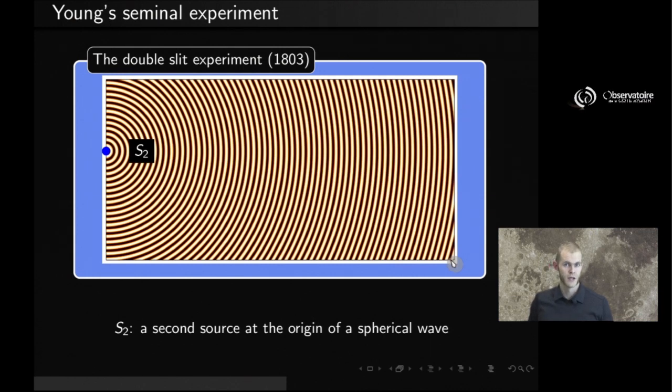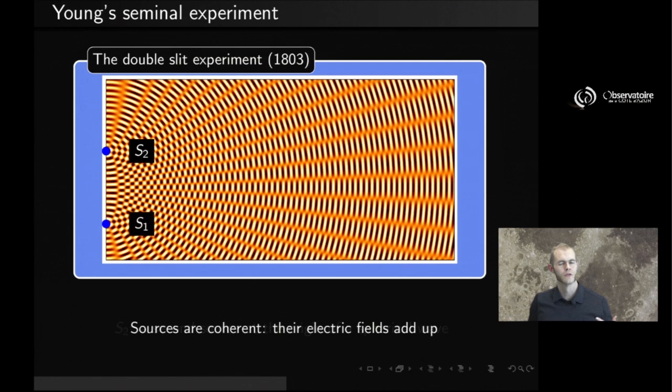Now, keep in mind that what I'm showing here on the screen is not something that our eyes would be sensitive to, because our eyes are not sensitive to the electric field. Instead, what we're going to sense is the intensity associated to that electric field. But you now know that when two light sources are coherent, what you're going to do to compute the intensity of that light is first to add up the electric fields associated to those two sources, which would look something like that, and would look very much like what you would observe if you were to make an experiment, for example, looking at waves at the surface of water.